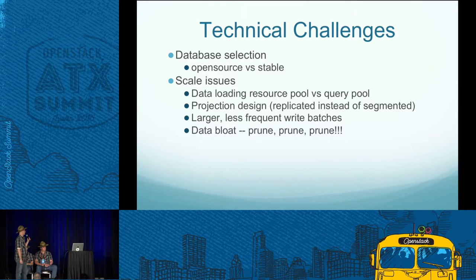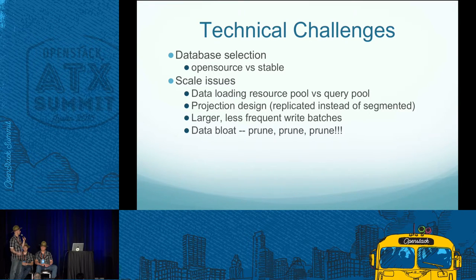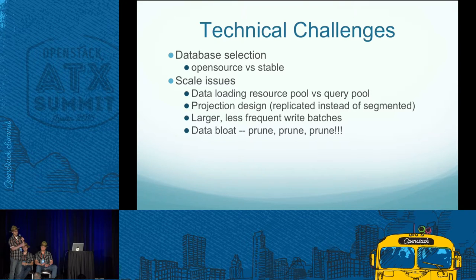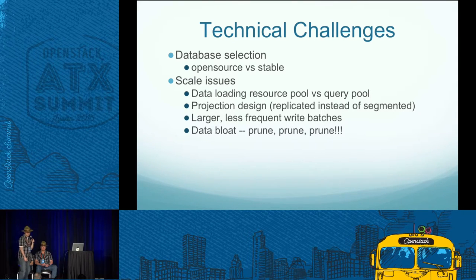Another thing we learned about Vertica is that it prefers larger batch writes at less frequent times. We were very chatty initially — bunches of threads writing little bits of data as quickly as we could — and it was just too much for our Vertica cluster. So we slowed that down, increased our batch sizes, and now Vertica handles big batches really well — it frees the database up to satisfy queries for getting data out, which is great.